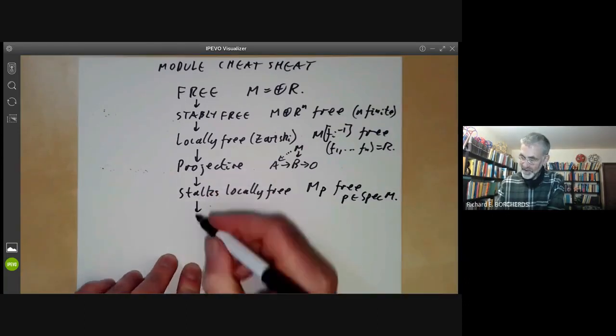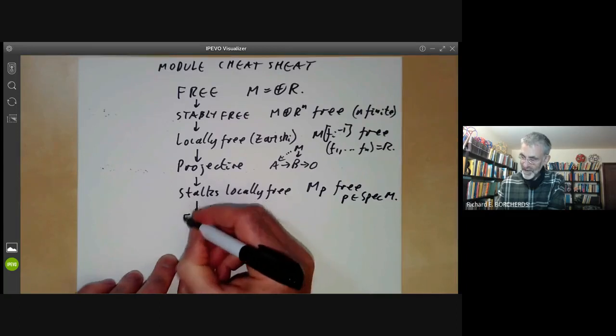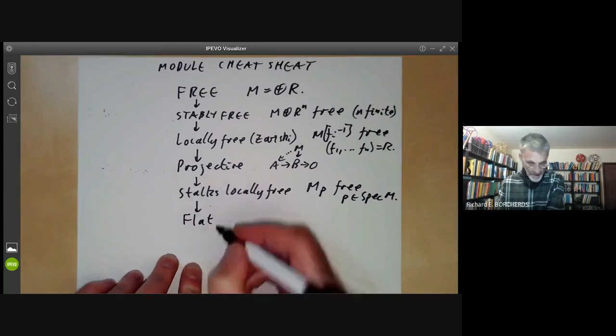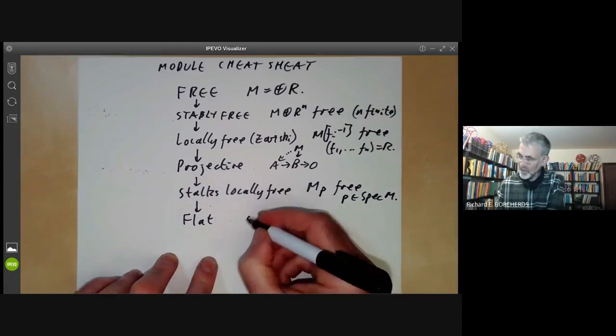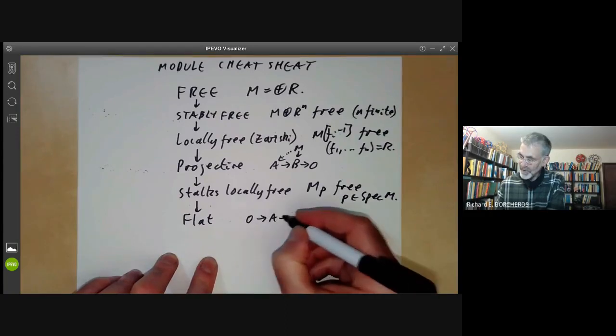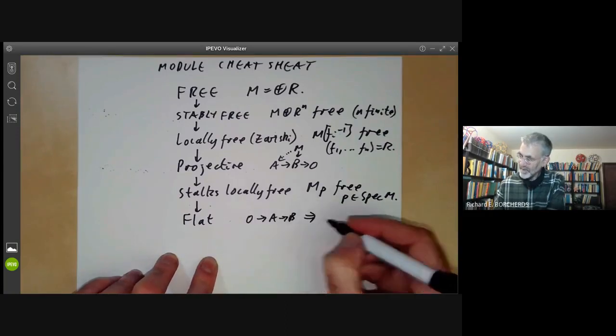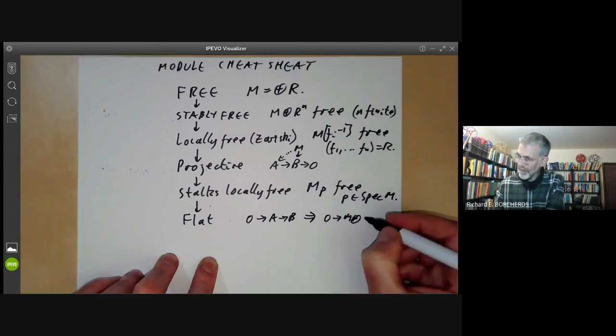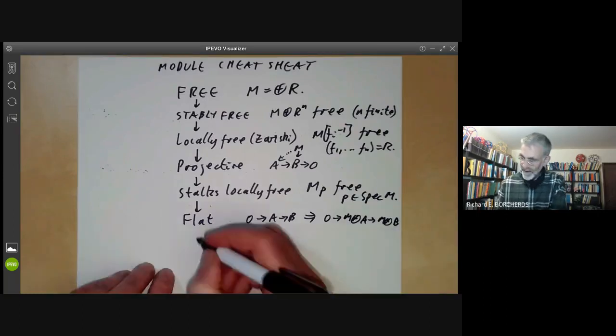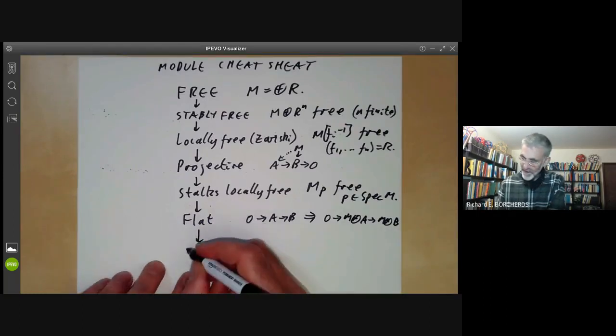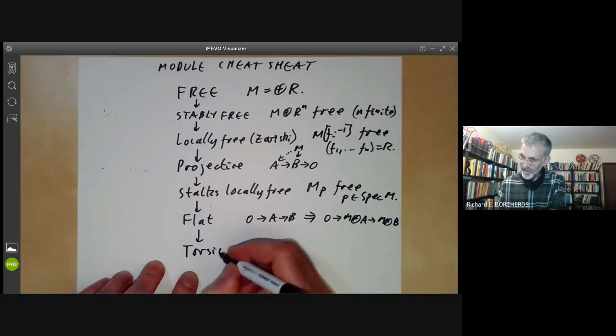And if the stalks are locally free, this turns out to mean that the module is flat. So flatness means if A is a submodule of B, this implies that if you tensor with M, this is still exact. And finally, flatness implies that the module is torsion free.